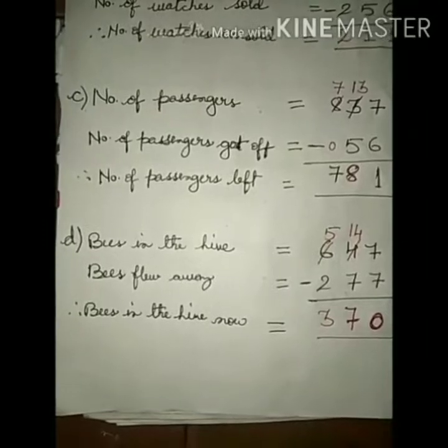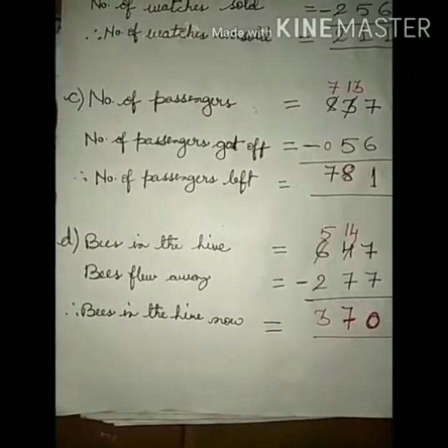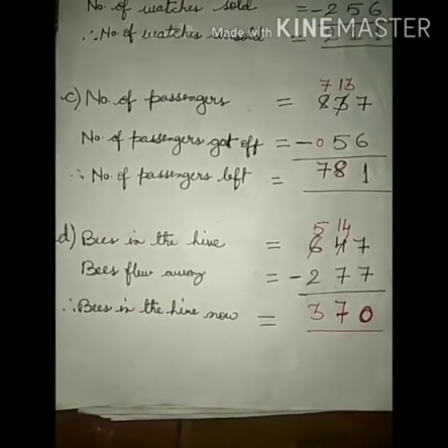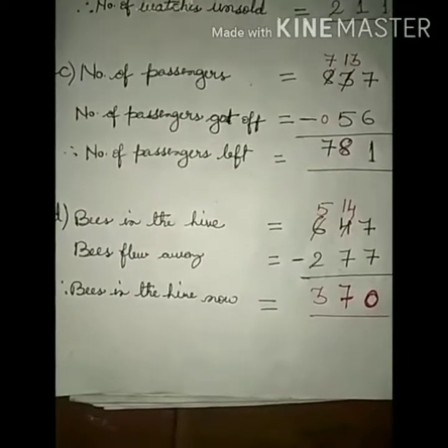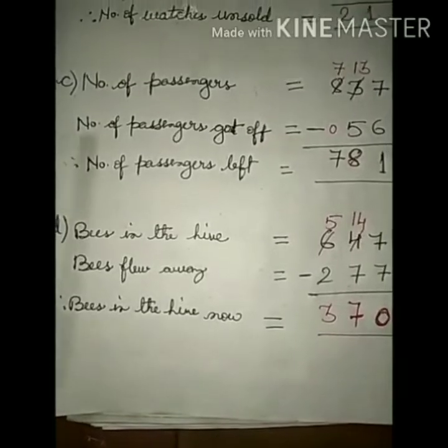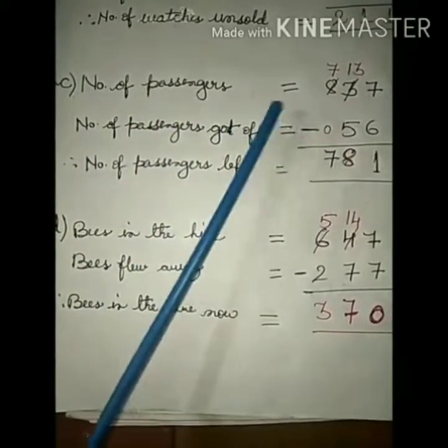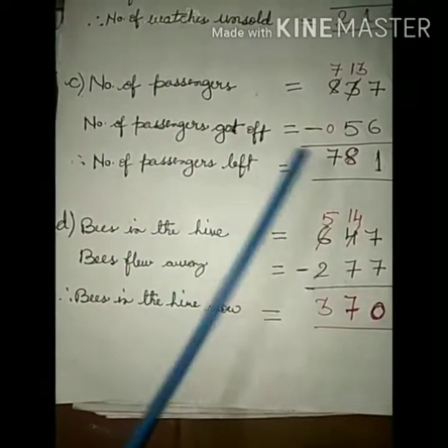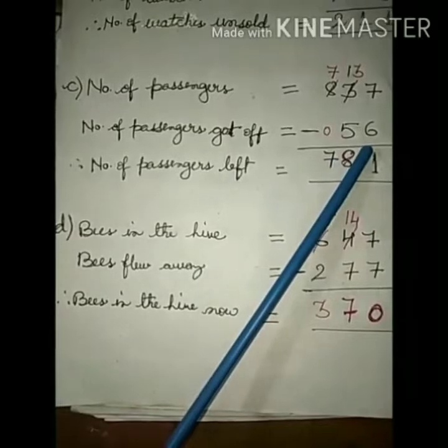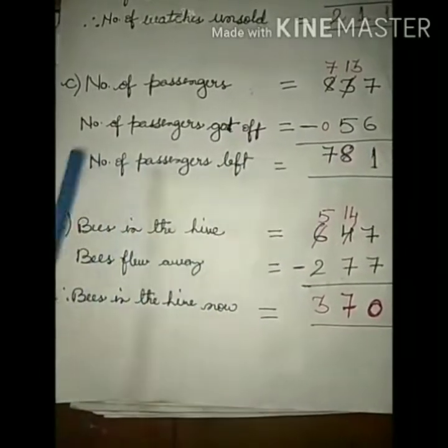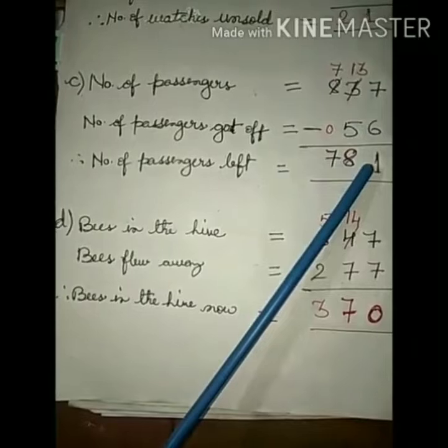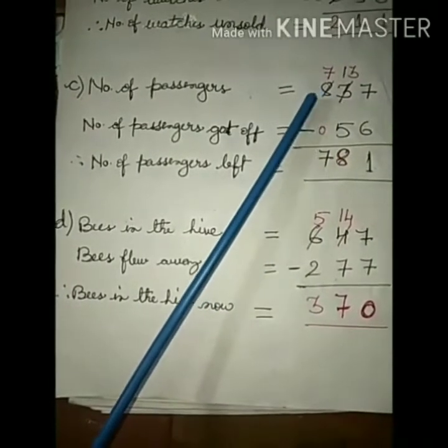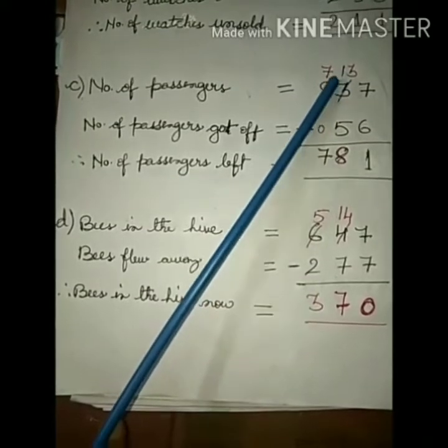Question C: A train carried 837 passengers. At a station, 56 of them got off. How many passengers were left in the train? Answer: Number of passengers got off from the train: 56. So subtract: 7 minus 6 is 1. 3 minus 5, you cannot subtract, so you have to again borrow from hundreds place, so it becomes 13.